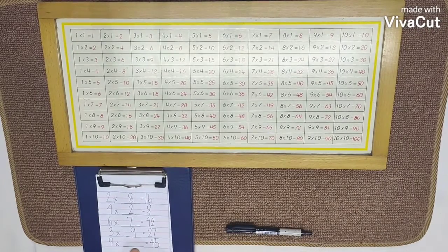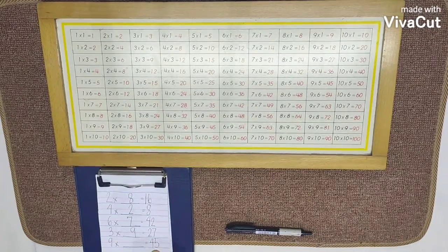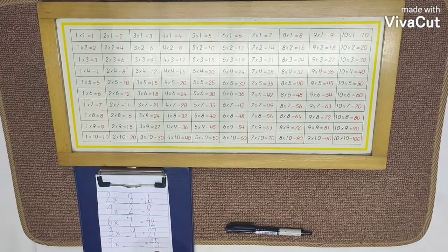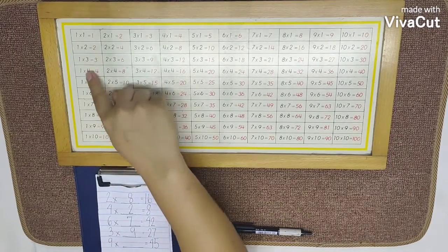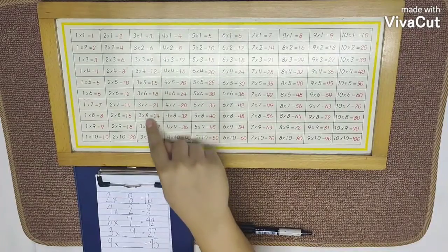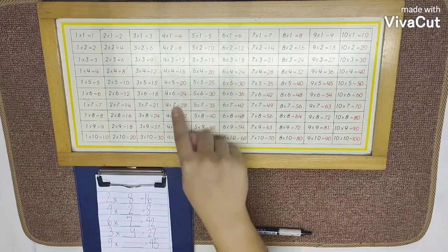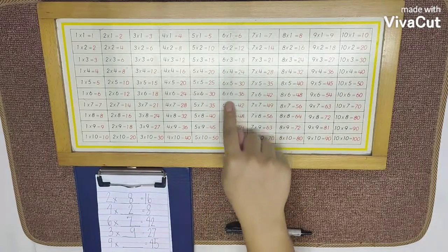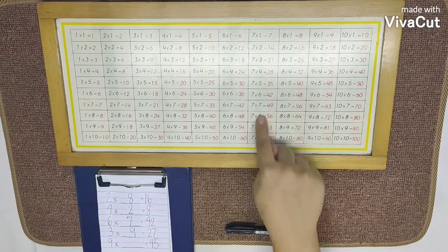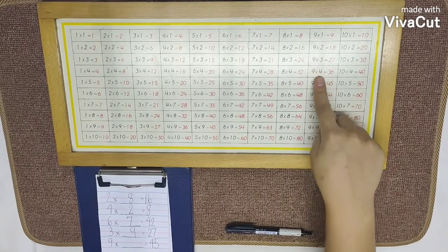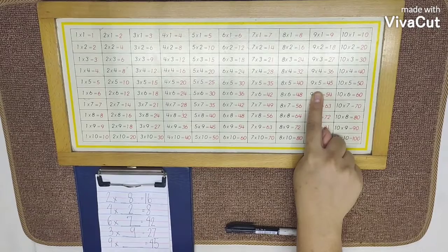9 times blank equals 45. 9 is our Multiplicand and 45 is our Product. Our missing multiplier is 5.